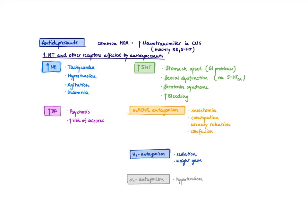For example, cisapride is a 5-HT4 agonist used as a prokinetic agent, so you can get diarrhea. Serotonin can also increase nausea and vomiting - we even use serotonin antagonists to prevent nausea and vomiting. Increased serotonin can also lead to sexual dysfunction, mediated by 5-HT2A receptors. Serotonin syndrome is a very dangerous adverse effect characterized by fever, mental status changes, and more. Additionally, there's an increased risk of bleeding because serotonin has inhibitory functions on platelet aggregation.